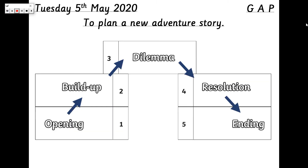Good morning everybody and happy Tuesday! Welcome to your English lesson. Before we start with our work for today, let's just have a recap of the work we completed yesterday. Massive well done to everybody because you have created some super text maps of Mossop and his adventures on Mud Puzzle Farm. You've really thought carefully about the story and added lots and lots of detail to those text maps.